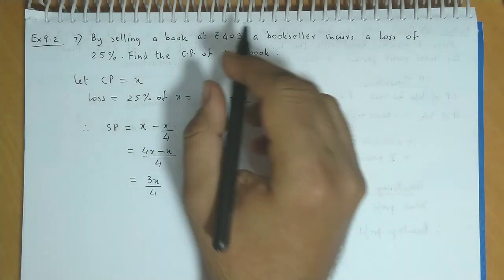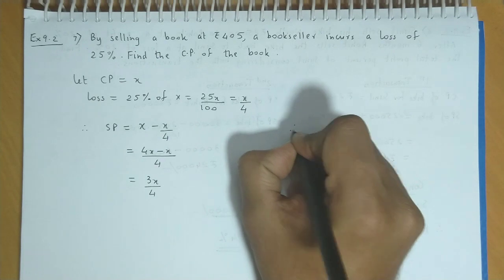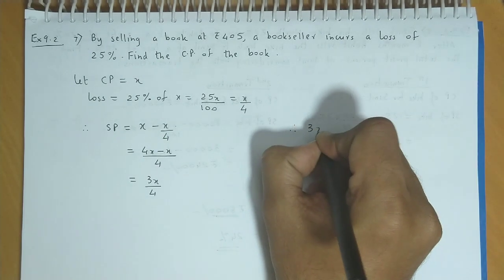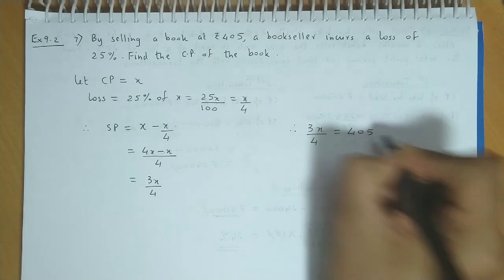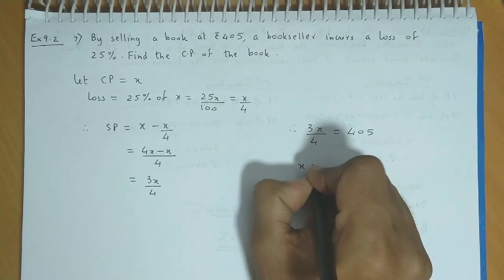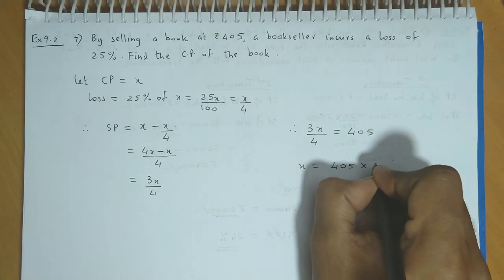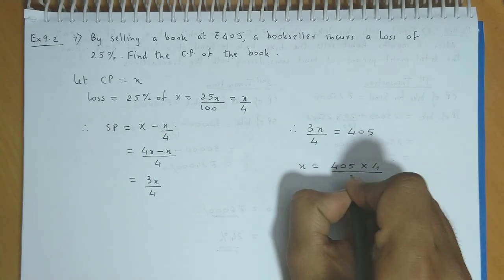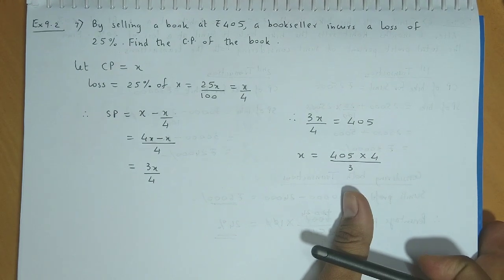The book's selling price is given as 405. So therefore, 3x/4 = 405. x = (405 × 4)/3. Let us simplify.